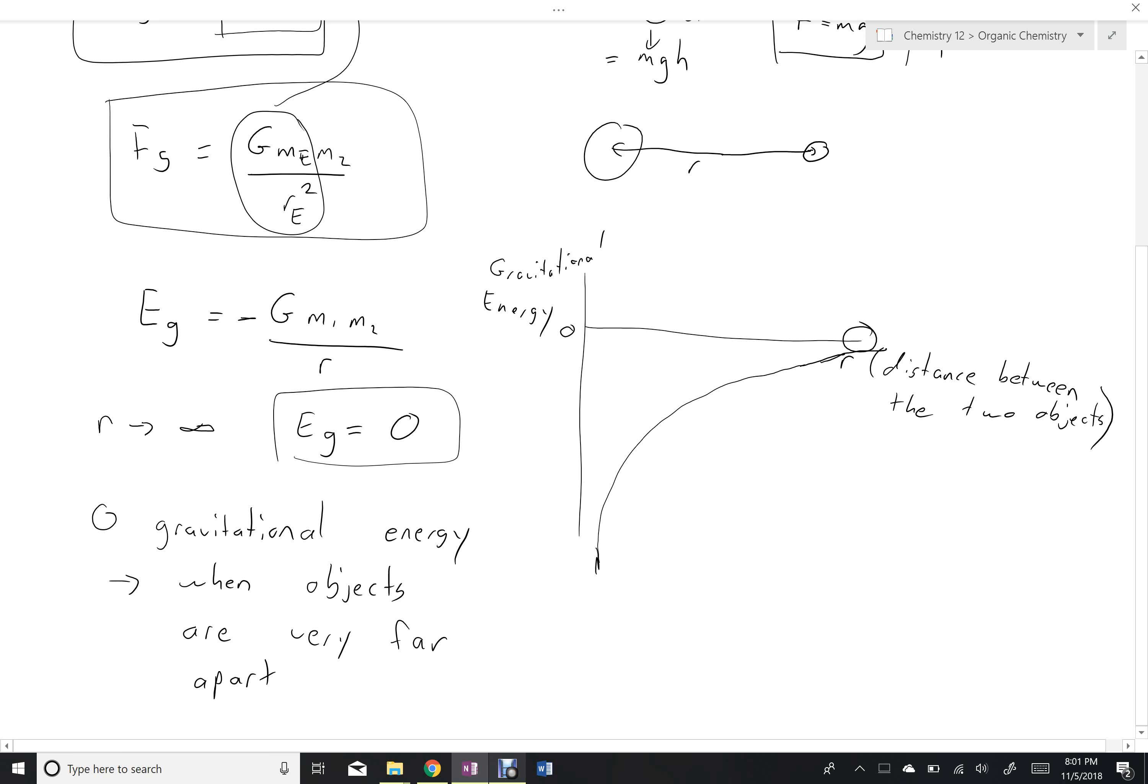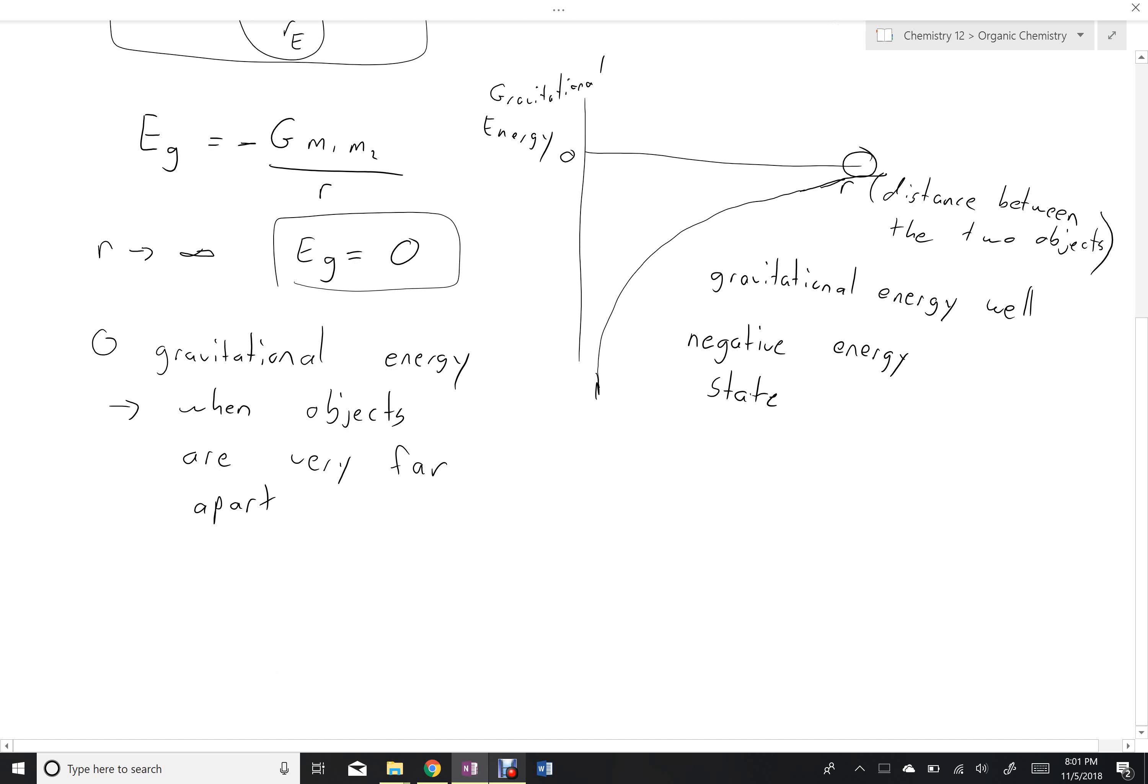And then as they come together, they move into a negative energy state. So what does it mean to be a negative energy state? Well, what's interesting about this is that sometimes this is called a gravitational energy well. Why would they call it a well? Well, if we imagine a well, so remember the well is like the thing, it's like a hole in the ground, where hopefully there's some water at the bottom of it and we consider this to be height zero. Then it's sort of similar here in that if we put things into the well, they go to a negative energy state.